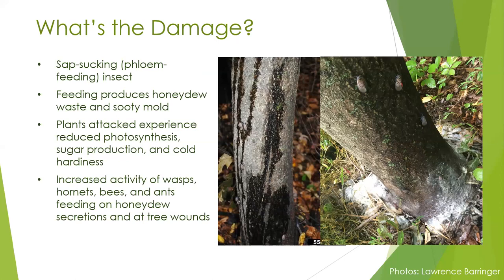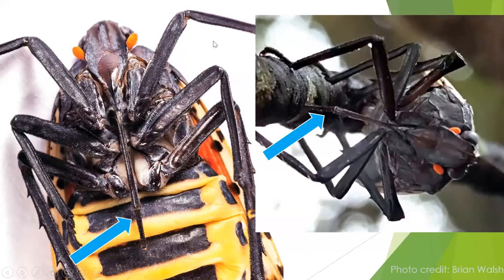Plants attacked by spotted lanternfly experience reduced sugar or sap production, which negatively impacts their ability to grow. A lot of them have been shown to lose cold hardiness, so they get more damage from hard frost and really cold temperatures. Another negative impact is that all of that sticky honeydew increases the activity of stinging insects like wasps and hornets, bees, and ants that come in to feed on the honeydew secretions and at the wounds these pests create in the tree where the sap is flowing out. If you have questions, please use the Q&A.